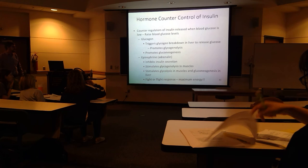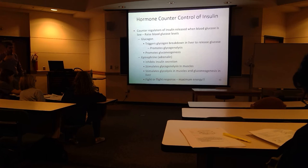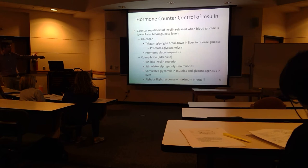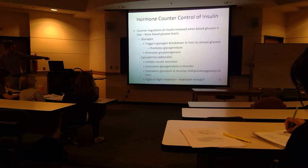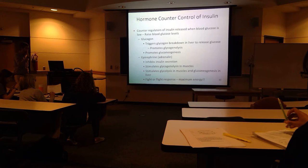Counter-regulators to high blood glucose include glucagon and epinephrine — also known as adrenaline. These are going to trigger basically the opposite things that insulin did. They're released when blood glucose is low and signal to raise it back up.